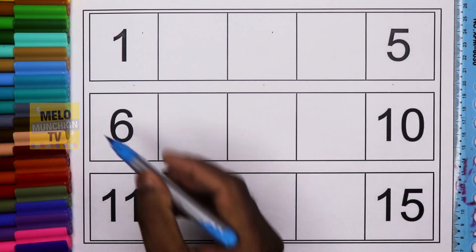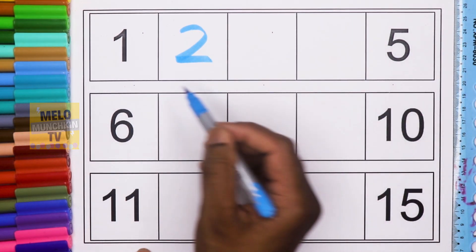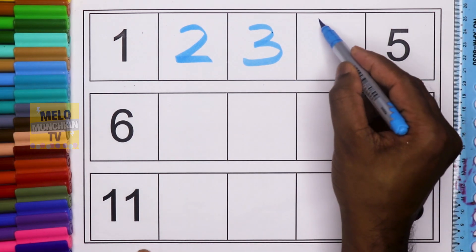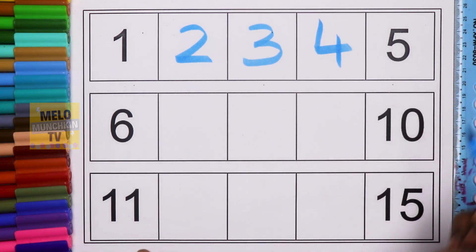So after 1 is 2, after 2 it is 3, after 3 is 4, and then 5. Okay, so first line is completed.